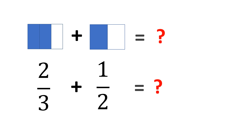We can make these two denominators the same by multiplying both fractions by a number. You may choose any common multiple of the two denominators. There are many common multiples for 3 and 2, like 6, 12, 18, 24, and so on. You can choose any, as long as in the final answer you always reduce to lowest terms and the answer will be the same. For me, I will use the least common multiple — the least common denominator or LCD — which is 6. To make it 6: for 2 thirds, we multiply by 2; for 1 half, we multiply by 3.